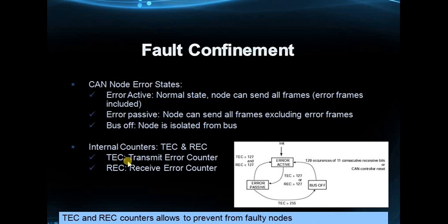As the error counters continue to increment, once the Transmit Error Count crosses 255, the node will automatically switch itself off from the network — the Bus Off state. There is no need to manually control that faulty node. This can happen due to a loose connection in the CAN bus lines. When in Bus Off, the node will not send any frames further, but it will keep on listening to the bus.